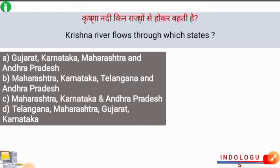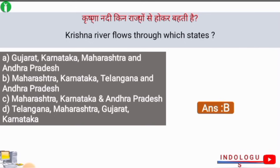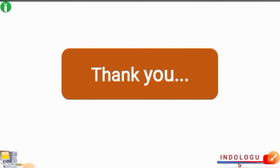Next question: The Krishna River flows through which states? The right answer is option B: Maharashtra, Karnataka, Telangana, and Andhra Pradesh. The Nagarjuna Sagar Dam is also on the Krishna River. With this we come to the end of this video. Thank you so much for watching, and I wish you all the best for your coming examinations.